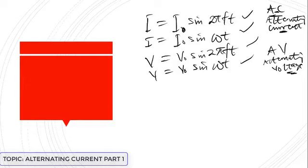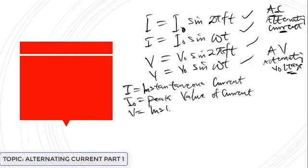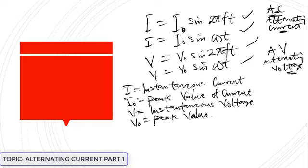Let's explain the terminologies. The symbol i (without subscript) is the instantaneous value of the current. The symbol i₀ (with subscript o) is the peak value of the current. Similarly, v is the instantaneous voltage, and v₀ is the peak value of the voltage.